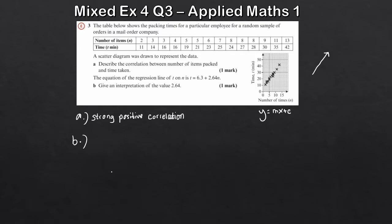So the 2.64, well what we're saying is that when the item increases by 1, so when n increases by 1 essentially, then the time taken increases approximately 2.64 minutes. So that's the idea there with the gradient.